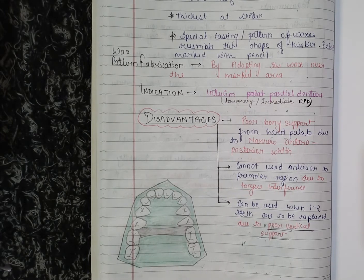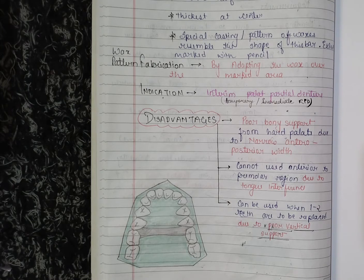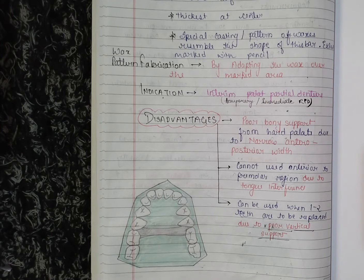So, poor bony support, poor vertical support, and tongue interference — these apply when one or two teeth need to be replaced. These are the disadvantages of the single posterior palatal bar. In the next video, we will discuss the next maxillary major connector.